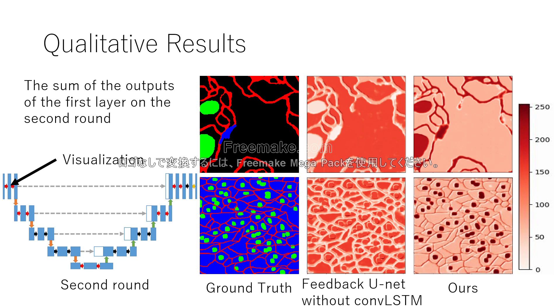Next, these figures show the sum of the output of the first layer on the second run. ReLU function is used after convolution. From left to right shows the ground truth, feedback unit without convolutional LSTM and ours. White means 0 and red means 255. The feature map of feedback unit without convolutional LSTM loses the information of cell membrane, mitochondria, and especially synapse.